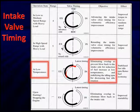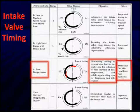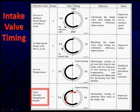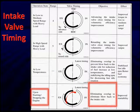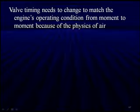At low temperatures, we eliminate overlap to prevent blowback to the intake side, reducing fuel enrichment at low temperatures and stabilizing idle RPM while decreasing fast idle. For cranking, we limit overlap to reduce blowback to the intake side for improved startability. All through these different operating ranges and conditions, things have been changing and we have been changing valve timing. It needs to change to match the engine's operating conditions moment to moment because of the physics of the air.